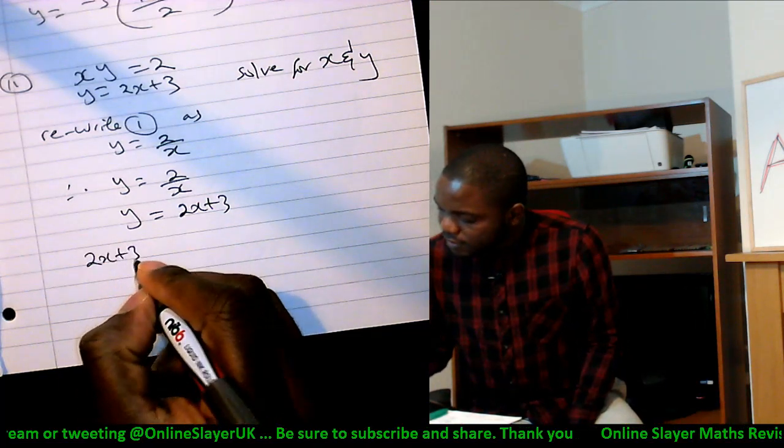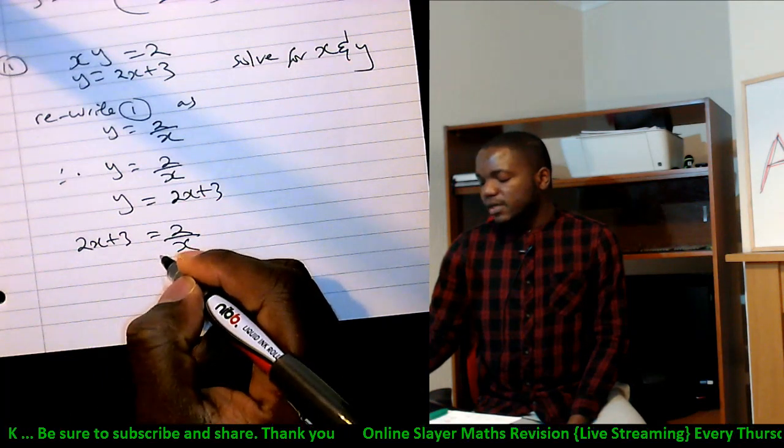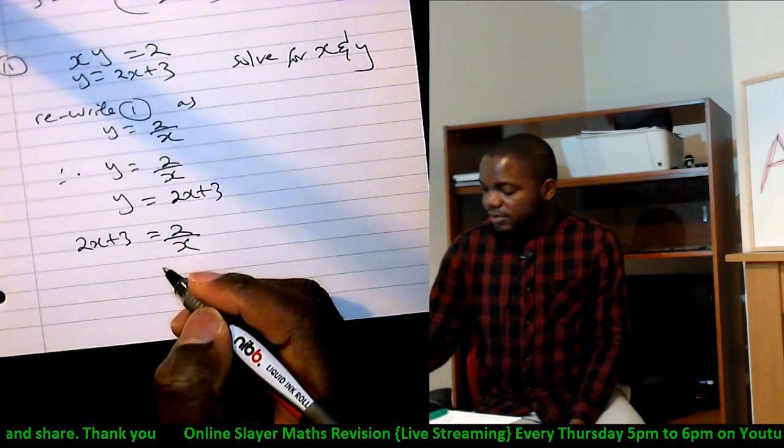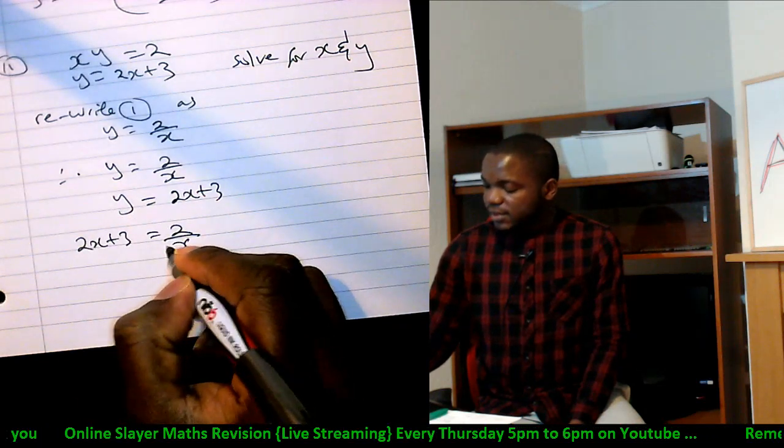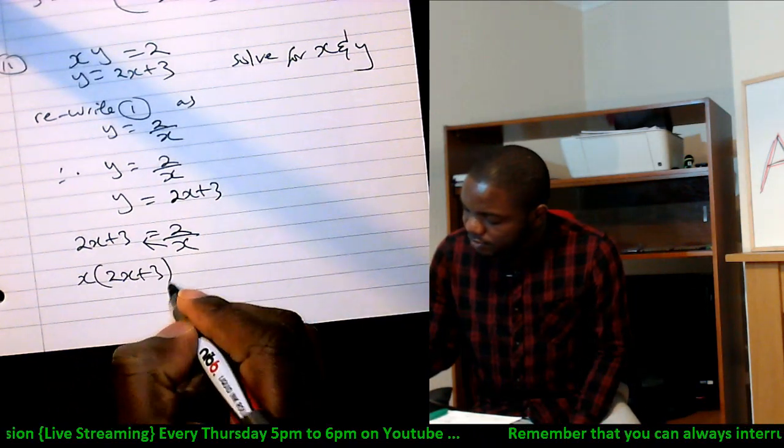You can cross multiply. So x goes there, it becomes x into 2x plus 3 equals to 2.